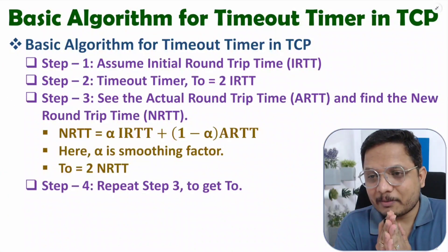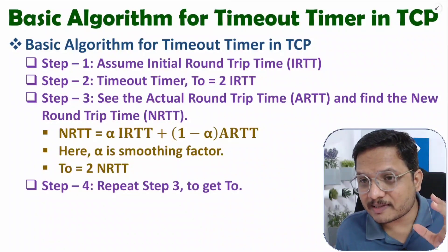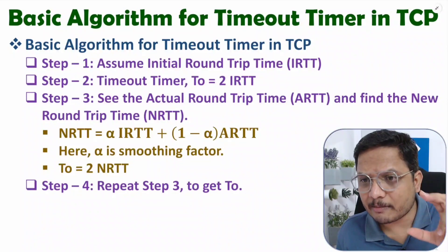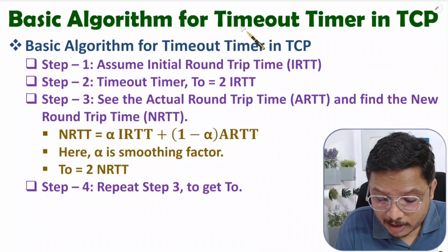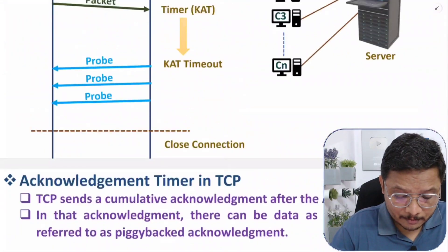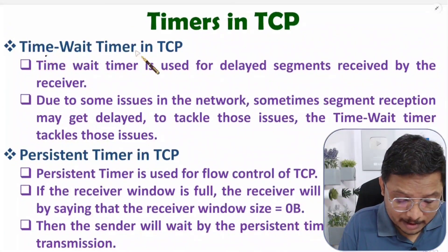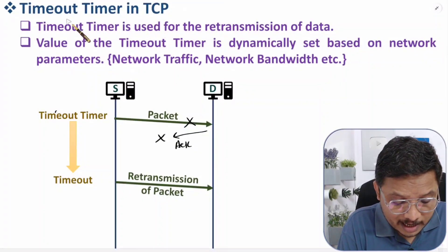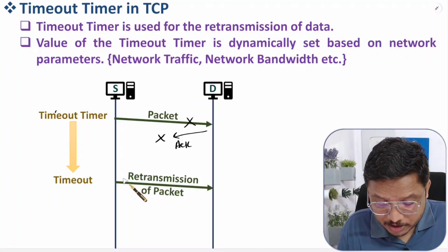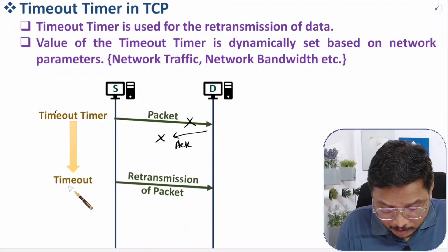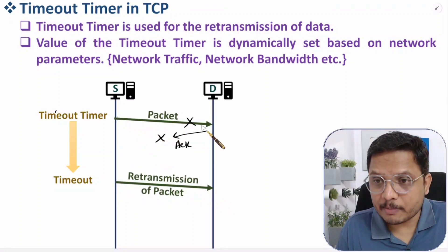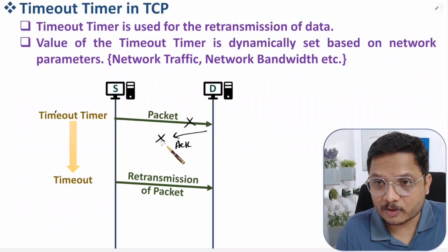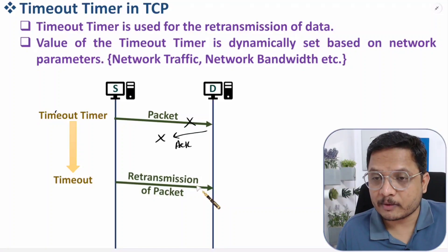Hello friends, welcome to Engineering Funda family. In this video I am going to explain the basic algorithm for the timeout timer in TCP. This timeout timer in TCP is used for retransmission of packets. After the timeout timer expires, the source assumes the packet or acknowledgement is lost and retransmits the packet.